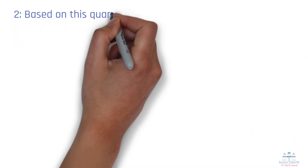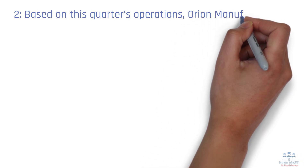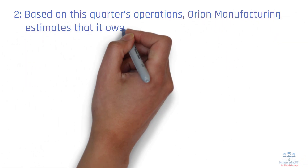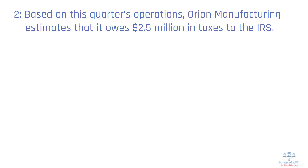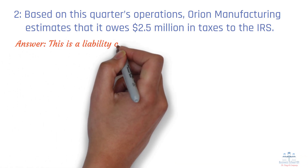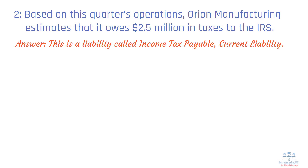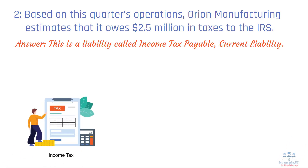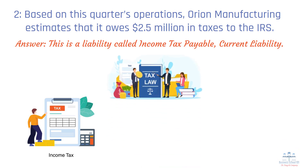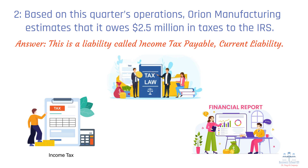Scenario 2: Based on this quarter's operations, Orion Manufacturing estimates that it owes $2.5 million in taxes to the IRS. Answer: This is a liability called income tax payable, a current liability. Even though there was no direct transaction, the company operated its business and generated taxable income, which creates a legal obligation to pay taxes. The company estimates the amount based on tax regulations and past financial records. While the exact amount may change upon filing, accounting principles require companies to report estimated tax liabilities to present an accurate financial picture.